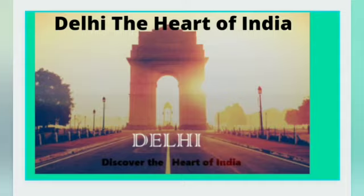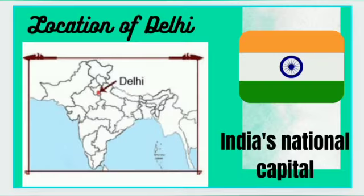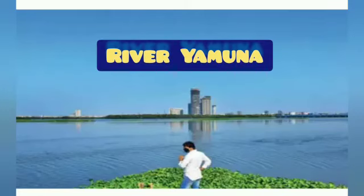So first of all, we are talking about Delhi. Delhi is one of the four metropolitan cities in India. It is also India's national capital. It is the world's eighth largest metropolitan in terms of population. This capital city shares geographical boundaries with Uttar Pradesh in the east and Haryana on the other three sides. Delhi is situated along the banks of the river Yamuna.